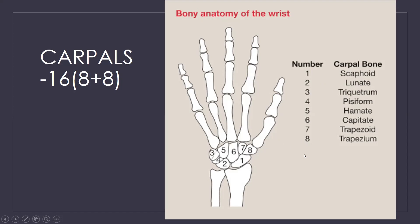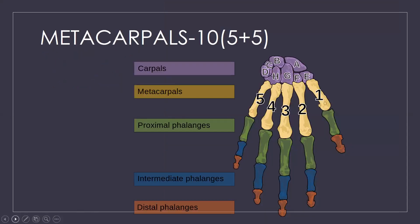Next are the metacarpals. You have one, two, three, four, and five — five in each hand. Five plus five equals ten. So ten metacarpals in total. Don't forget: the first group is carpals and the second is metacarpals.